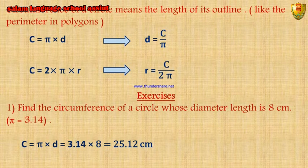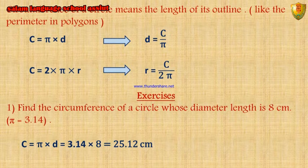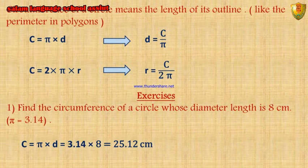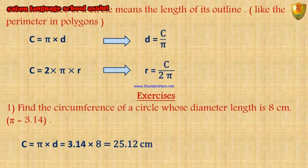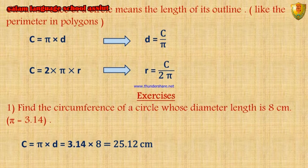Exercises. Number 1: find the circumference of a circle whose diameter length is 8 cm, using π equals 3.14. Circumference equals π times D, equals 3.14 times 8, equals 25.12 cm.